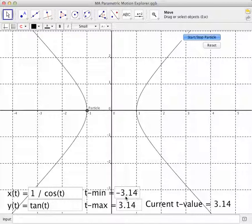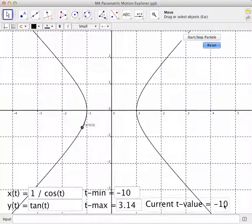What happens is it moves from your tmin to your tmax, and you can change those. Now, if I hit reset, it jumps down to the tmin, and then it will start.